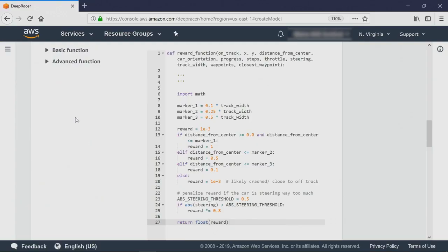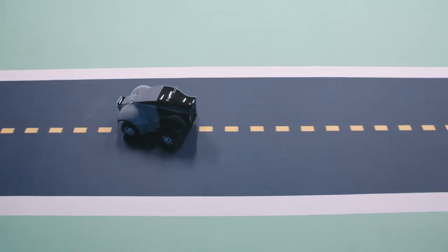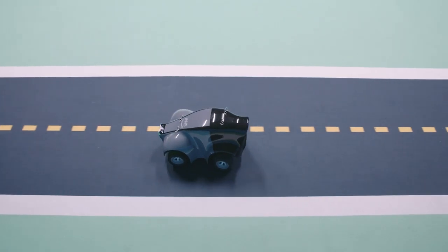Now, let's quickly take a look at the advanced version of this function, which in following the best practices I mentioned earlier, iterates on the basic version of the function by adding just one other parameter to incentivize. As you see, this template continues to reward the car for staying close to the center line, but also now adds a penalty for steering too much in order to prevent the car from turning away from the center line of the track.